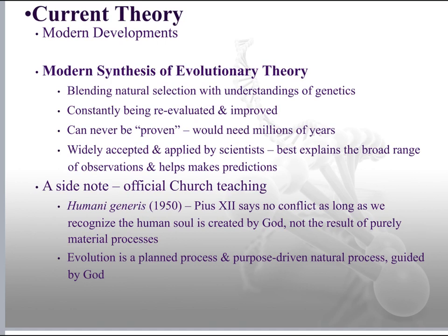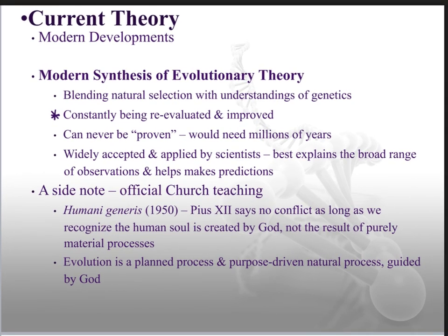Taking Darwin's thoughts and blending them with what we know today — blending natural selection with genetics — we know that genes play a role in evolution. Some genes get left behind, some get mutated and provide a beneficial adaptation. We continue looking at Darwin's theory, but it's not necessarily perfect and we'll keep refining it. We can't ever really prove it — you'd need millions of years and generations to really see that change — so we turn to the fossil record. It's widely accepted and the best explanation for the broad range of observations.